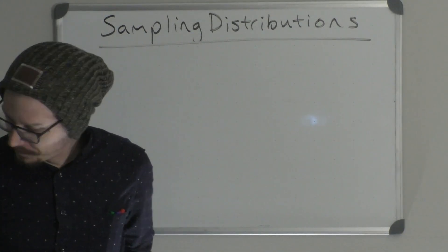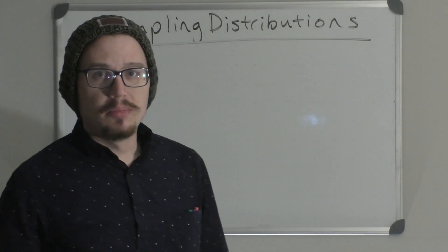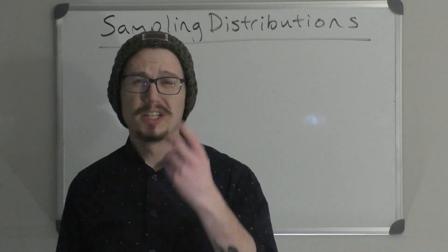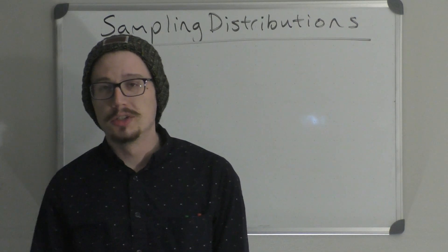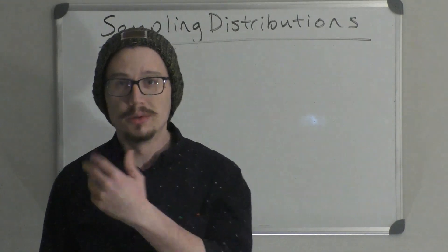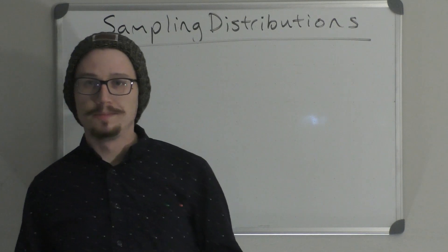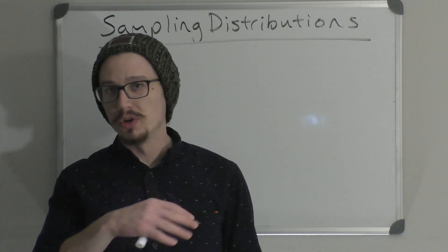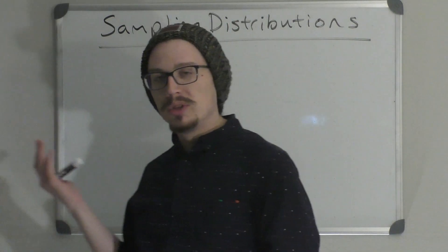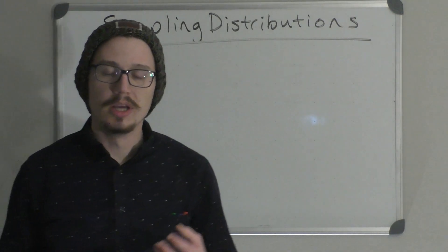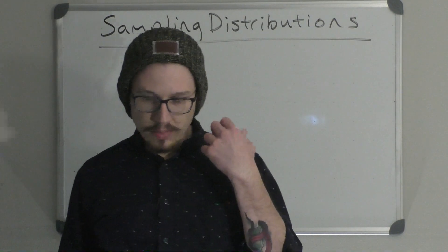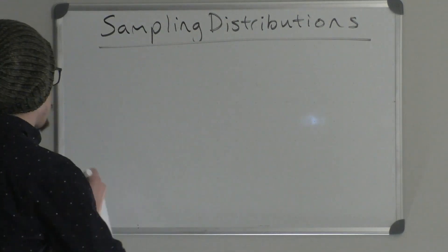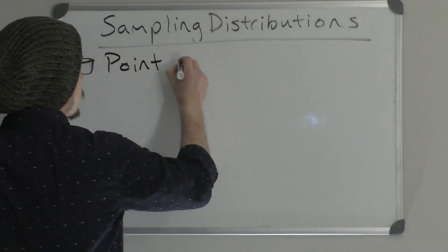Now we're going to talk about sampling distributions. Sampling distributions are similar to other distributions we've already been looking at — specifically probability distributions for continuous data. We looked at the normal distribution and the standard normal distribution for our X's and Z's respectively. Now we've got a new type: the sampling distribution, which is the probability distribution for a point estimator.